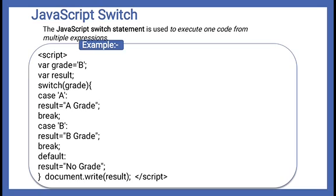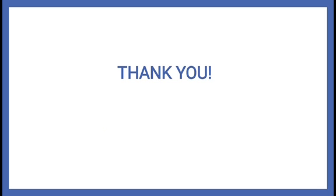Similarly, we discuss `switch`. Switch is used when we have more than one statement to match. For example, we created a variable `grade` and stored 'B' in it. `result` has undefined value. Inside switch, we passed `grade` — indirectly passing 'B'. It will look for a matching case. If a matching case is found, it executes that case. If nothing matches, the default case runs. We will continue this in the next episode.